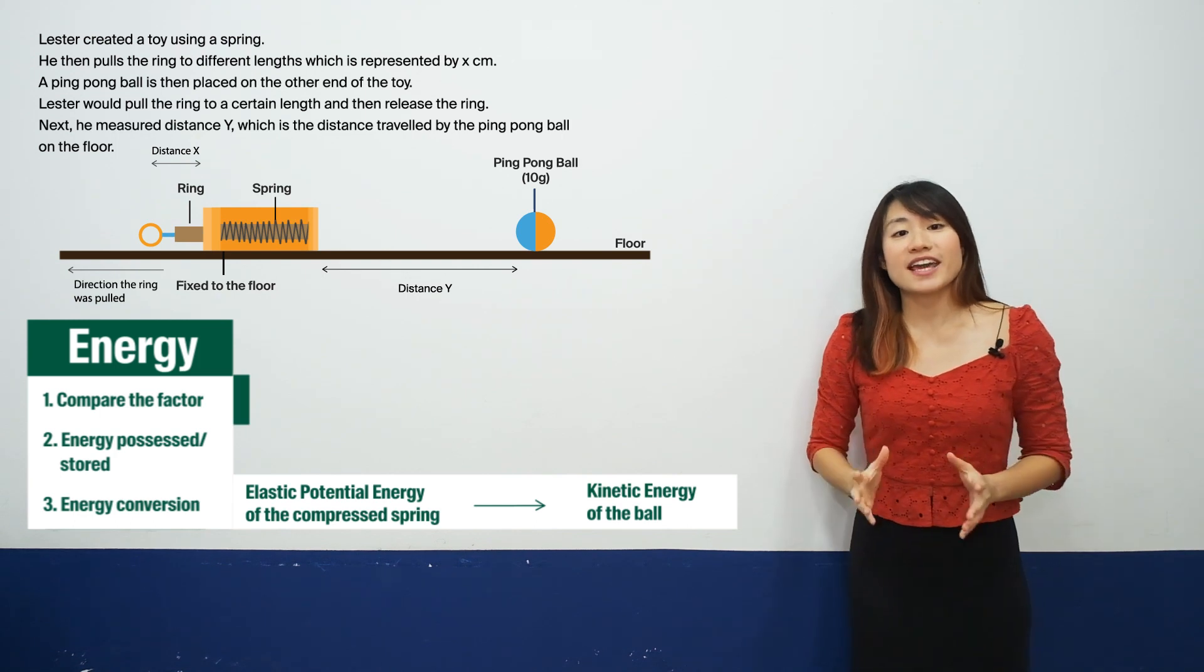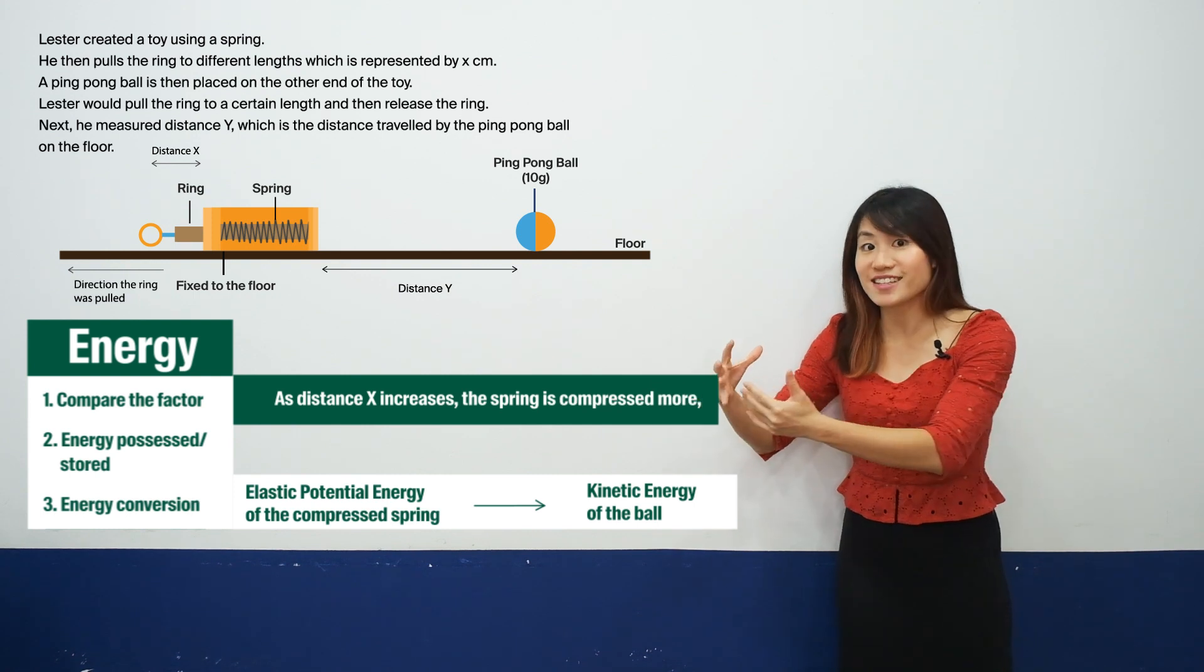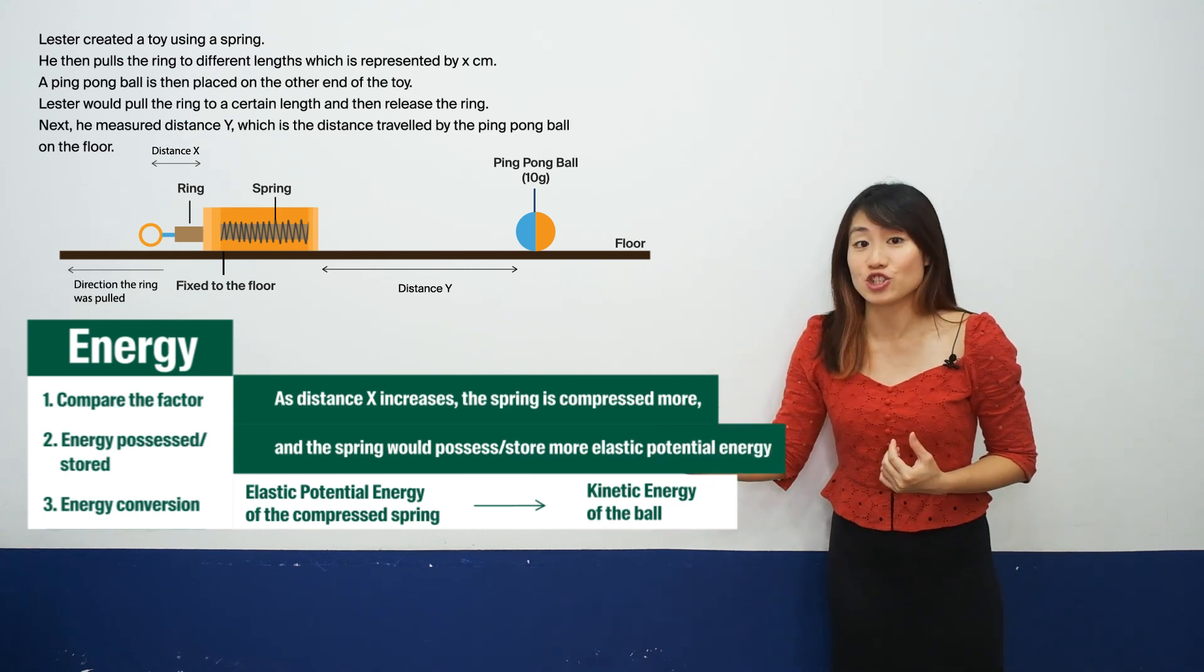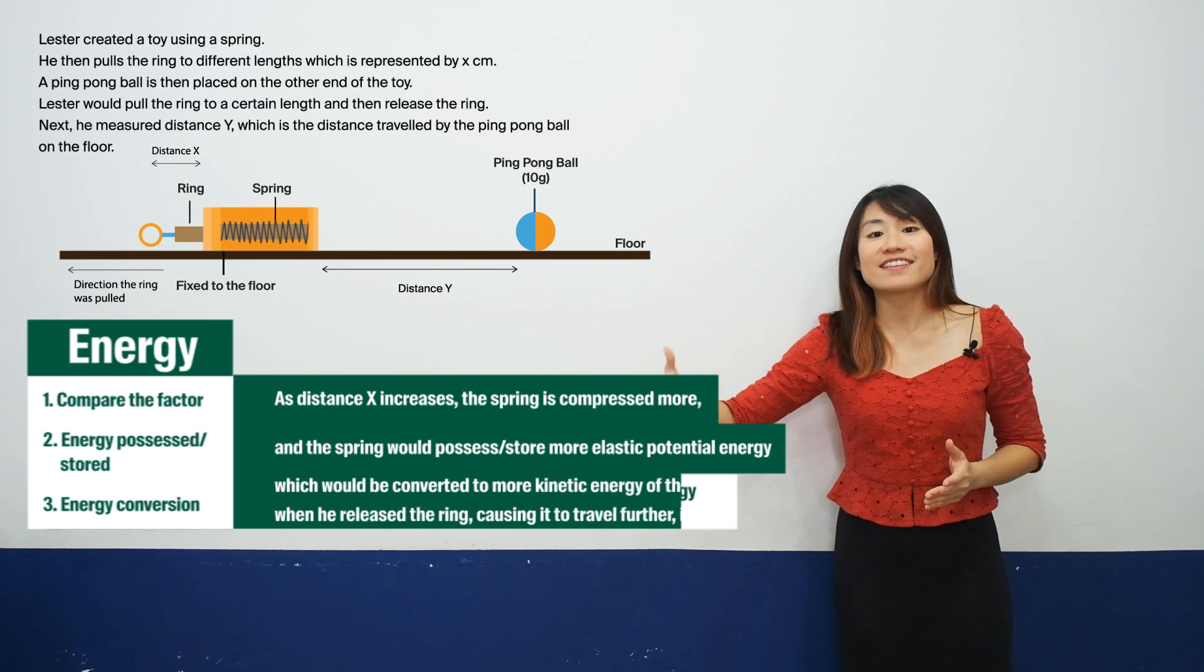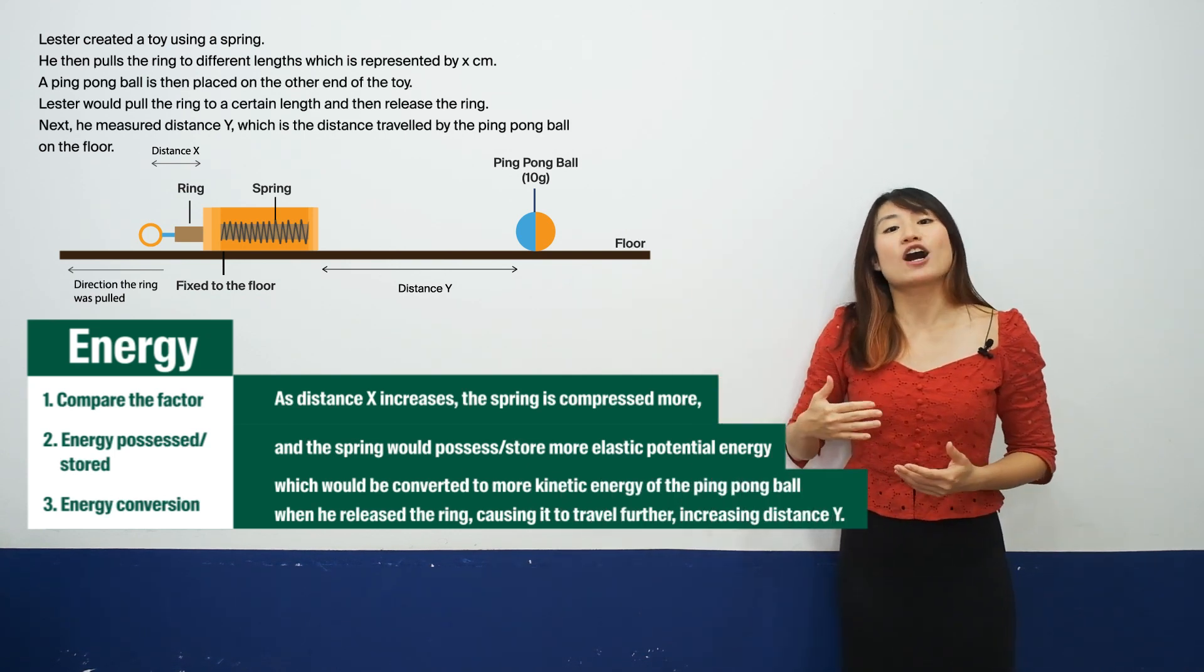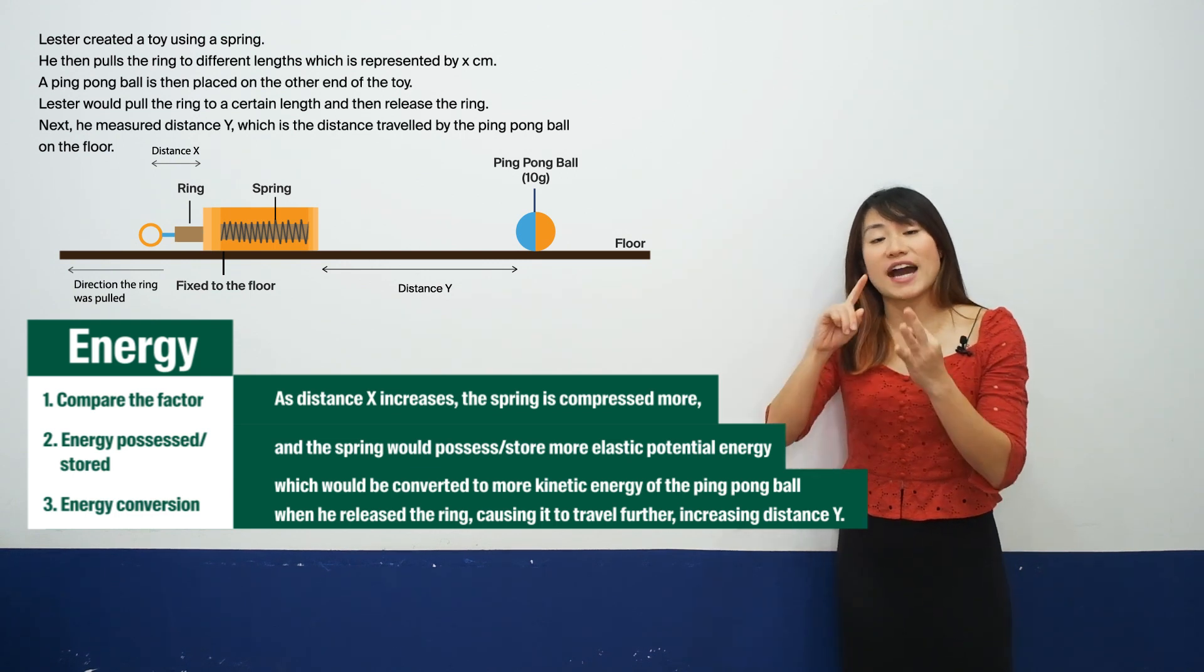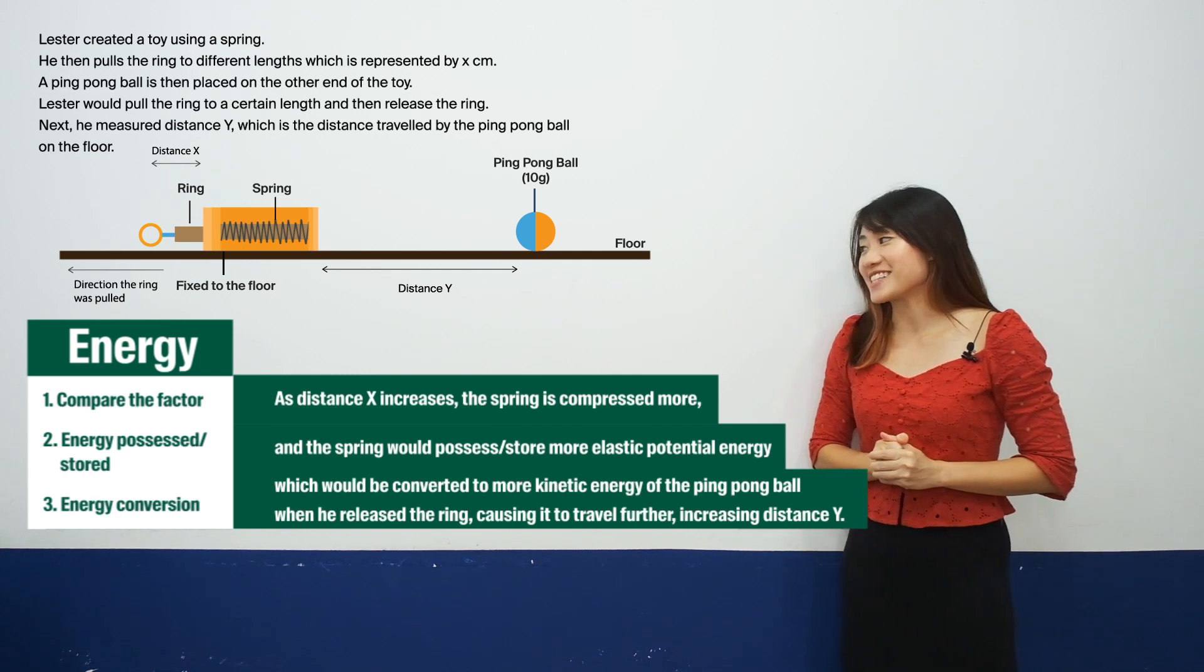So in this case, since the spring is compressed more and more, similarly as distance X increases, we know that the spring would now store more elastic potential energy. This will then be converted to more kinetic energy of the ball when the ring is released. And that's how the ball is able to travel a further distance. So again, using the answering technique, as long as you've identified these three steps, here would be your final answer.